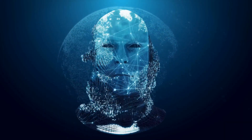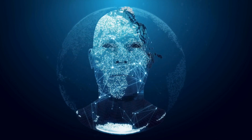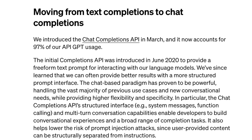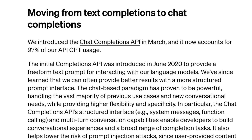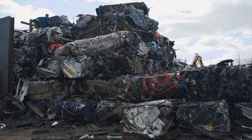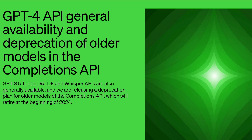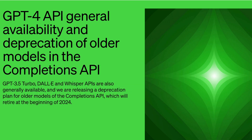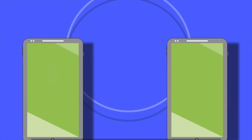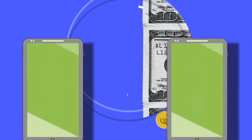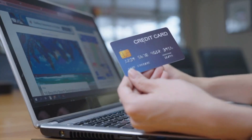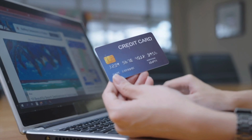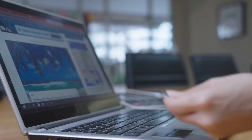OpenAI has also introduced enhancements to chat-based models, disclosed a transition from the completions API to the chat completions API, and provided details about their plans to phase out older models. There is one caveat: the GPT-4 API is accessible only to existing developers who have a successful payment history, meaning your card must have been charged successfully at least once in order to gain access.